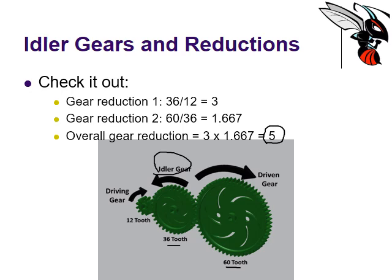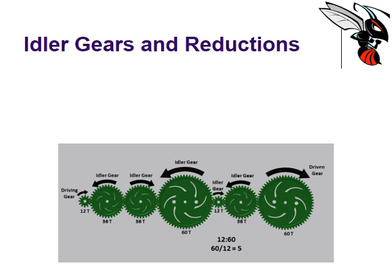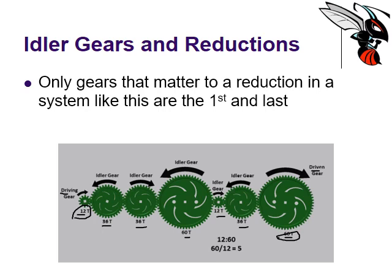So the idler gear does absolutely nothing to the gear reduction. Look at this complex system — we've got seven gears in this gear train: a 12 tooth to a 36 to a 36 to a 60 to a 12 to a 36 to a 60. But ultimately, if you're trying to figure out the mechanical advantage from a complex system like this, all you care about is the 12 tooth and the 60 tooth — the driving gear and the driven gear. We still have a 12 to 60 ratio, which is a five reduction. The only gears that matter in a reduction are the first and the last. The idler gears, while they may be useful, don't actually give you any mechanical advantage.